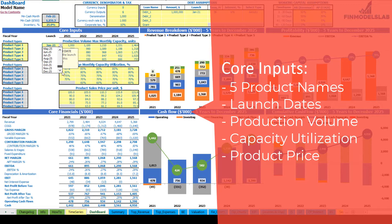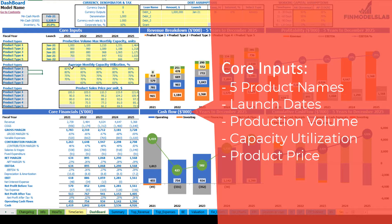The next step is to set up your production volume — maximum monthly capacity in units. This means that in 2021 for product type one you can produce a maximum of 1,000 units per month. Obviously you will not always produce the maximum monthly capacity, so there is a monthly capacity utilization percentage by product types and by years. If you put 80%, it means that for 2021 on average you'll produce 800 units per month instead of the maximum 1,000.